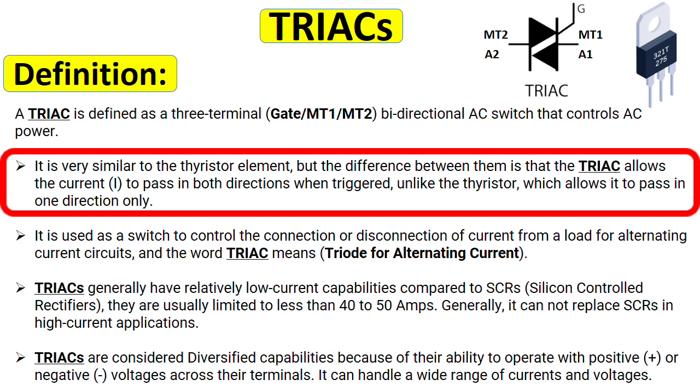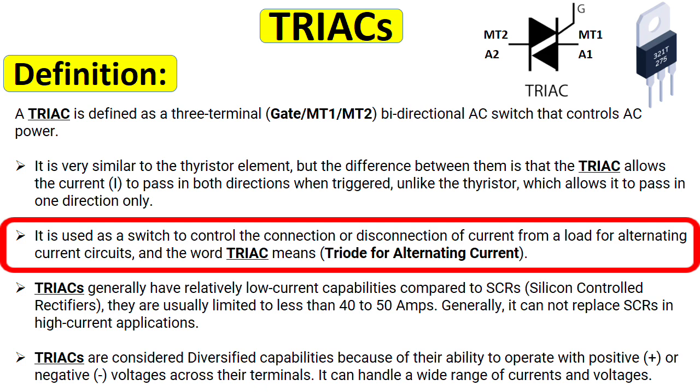It is very similar to the thyristor element, but the difference between them is that the TRIAC allows the current to pass in both directions when triggered, unlike the thyristor which allows it to pass in one direction only.